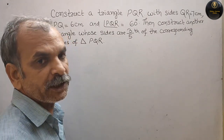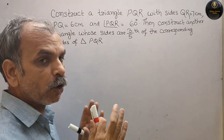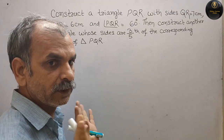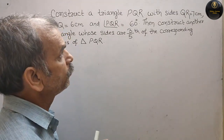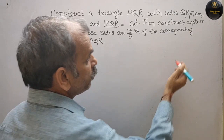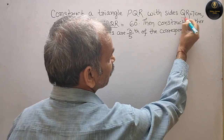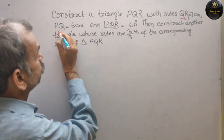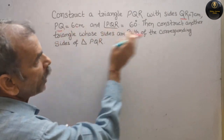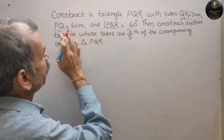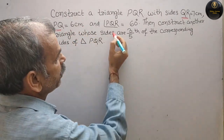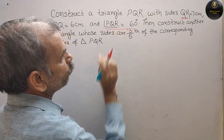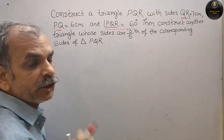तो देखो, इसने measures क्या दिया है — जो हमको original triangle बनाना है। क्या दिया है? QR is 7 cm, PQ is 6 cm, और यह देखिए angle भी दिया है, that is your Q angle is 60 degree.